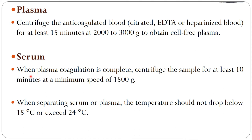In case of serum, when the plasma coagulation is complete, only then centrifugation should be done — for at least 10 minutes and at a minimum speed of 1500 g. Normally when there is additional load in the laboratory, the time factor is reduced, which always hampers the quality of the sample. When the serum or plasma is being separated, the temperature of the room should not drop below 15 degrees Celsius or exceed 25 degrees Celsius. The room temperature has to be ambient and must be maintained.